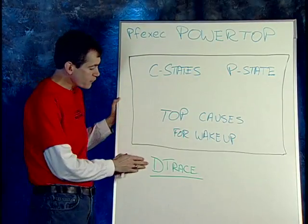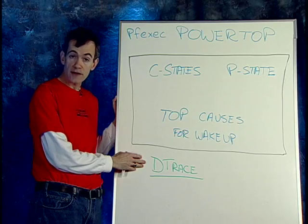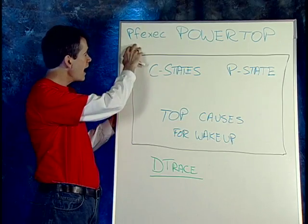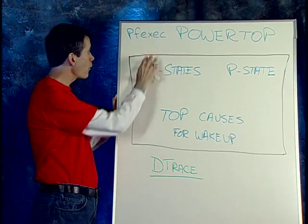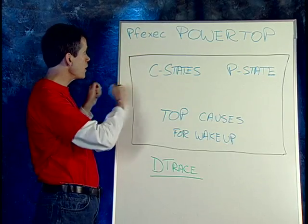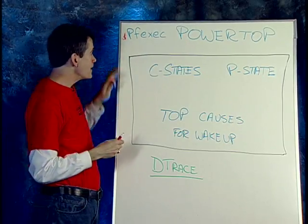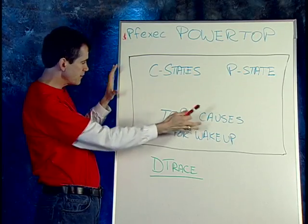The tool we've developed is called PowerTop. I'd like to give you some idea of how it works and how you can use it. It was developed by a very smart person here at Intel, originally for Linux, and we have it available on Solaris and OpenSolaris. We've used one of the really powerful capabilities in the Solaris operating system called DTrace — we've added DTrace probes to give us this information. On OpenSolaris, you use the pfexec command to run PowerTop.